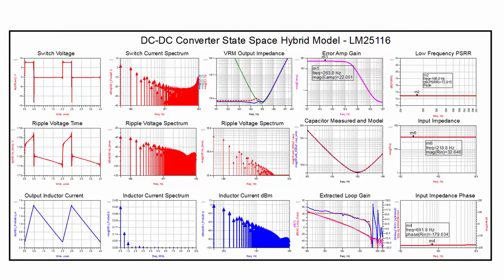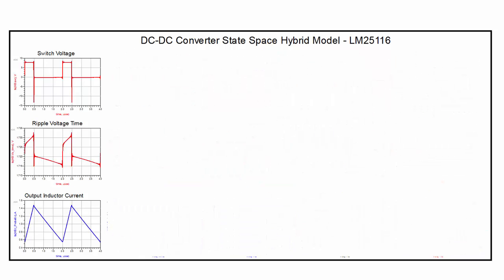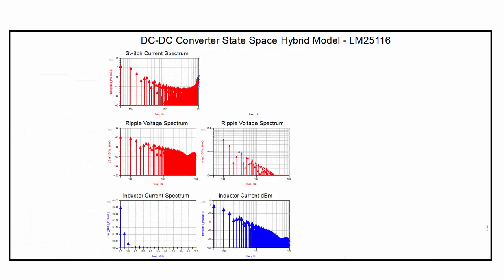All of these plots are the result of a single model, and the simulation runs in a fraction of a second. The simulator data display shows many performance characteristics of the DC-to-DC converter. Time domain displays show the current in the output filter inductor, the switch voltage, and the output ripple voltage.